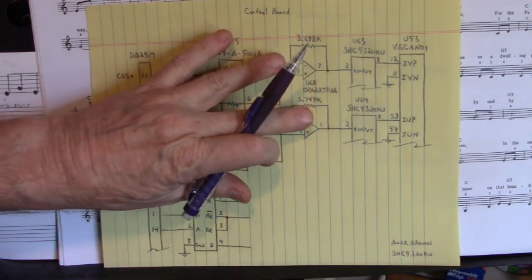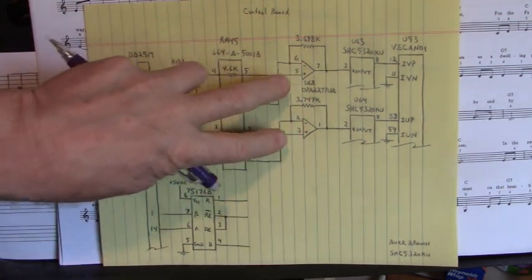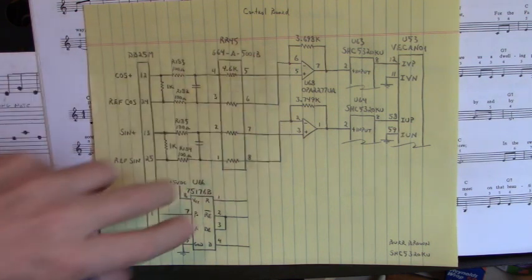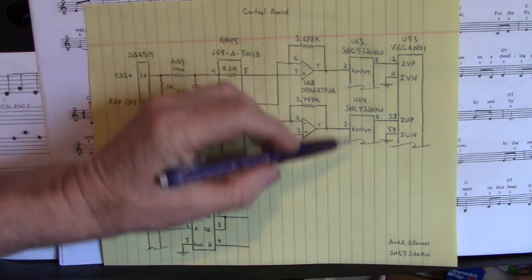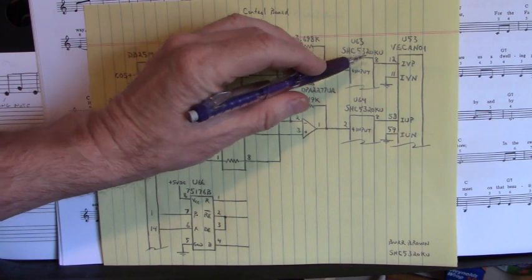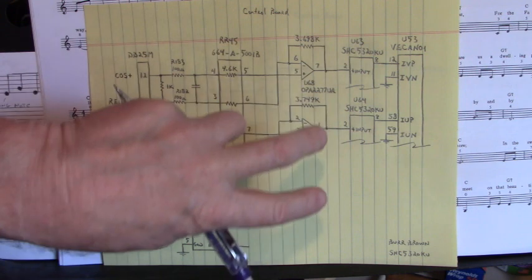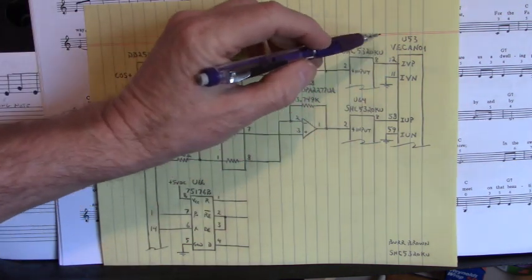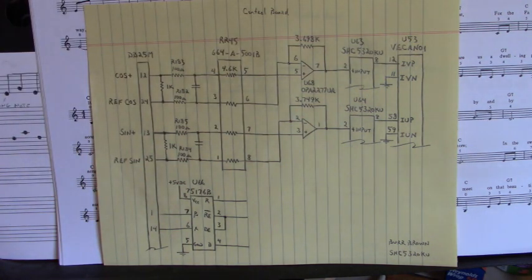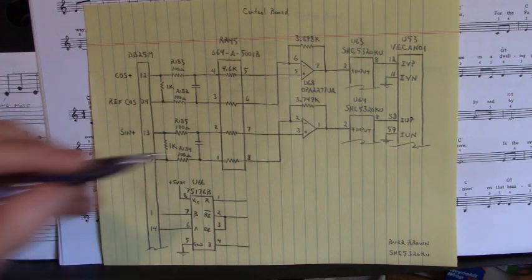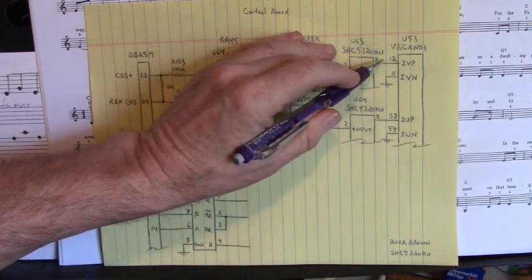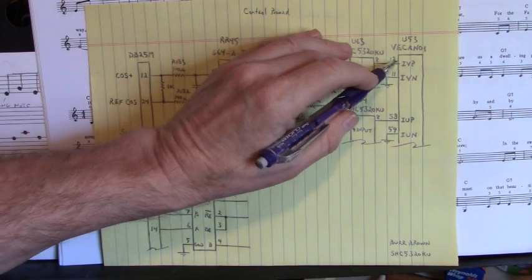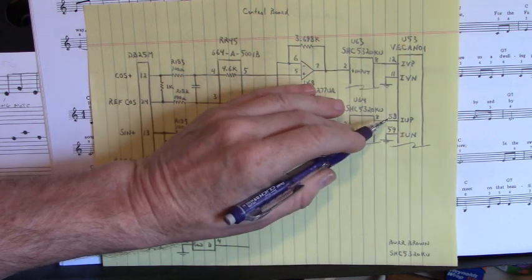Those signals were applied to these two operational amplifiers — square wave in and square wave out. They went to a sample-and-hold IC, the SHC5320KU. The output of the sample-and-hold IC went to the input of this VECAN01 IC, which is a 10-channel, 12-bit data acquisition system IC. And what we were looking at in the previous video was this point right here at 8-to-12, and this point right here at 8-to-58.